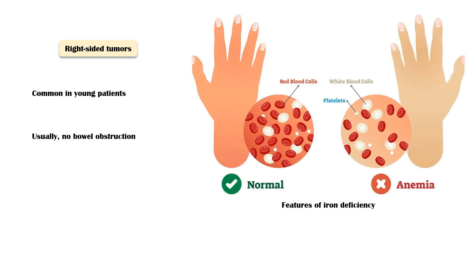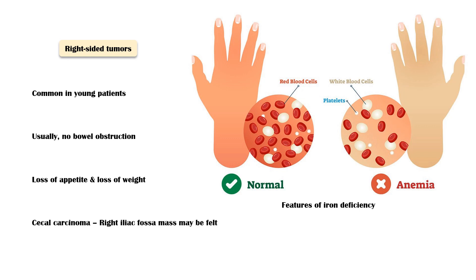Right-sided tumors commonly occur in young patients. They usually do not cause bowel obstruction because the ascending colon has a large diameter compared to the descending and sigmoid colon. Since these tumors can bleed chronically, individuals with right-sided colon cancer typically present with features of iron deficiency anemia, such as fatigue and pallor of mucous membranes. They may also have loss of appetite and loss of weight. In cases of cecal carcinoma, a right iliac fossa mass may be felt.